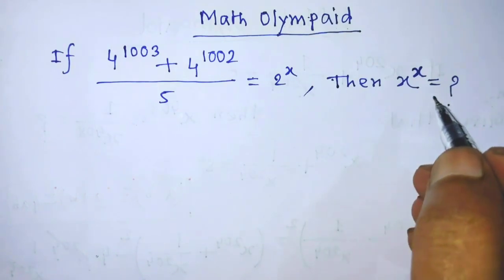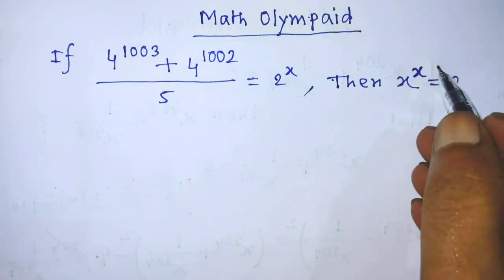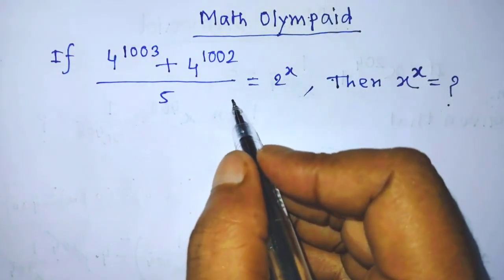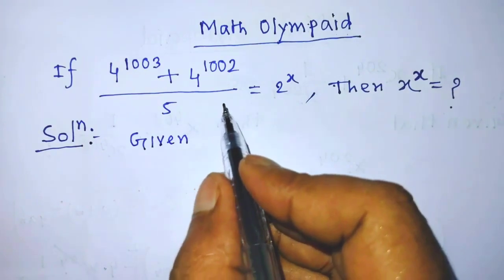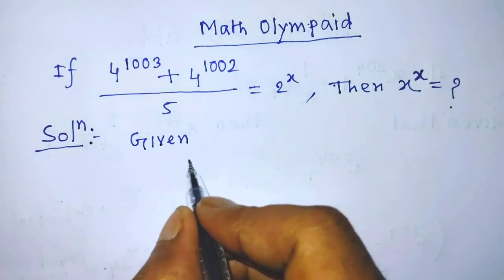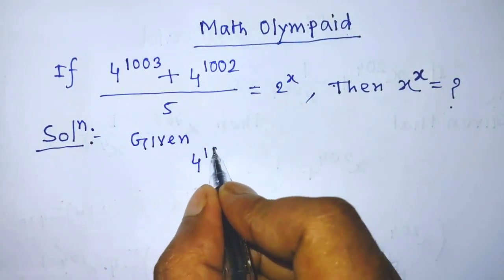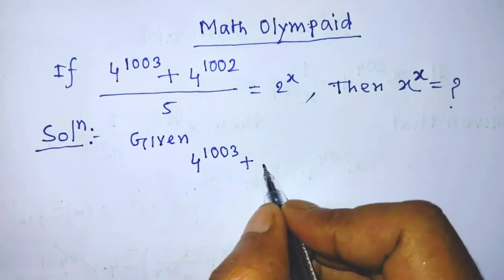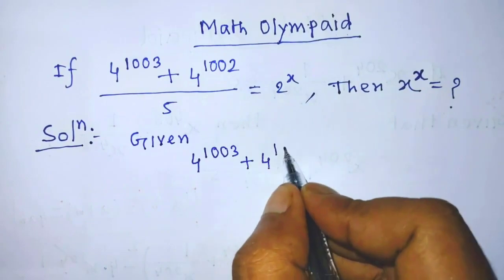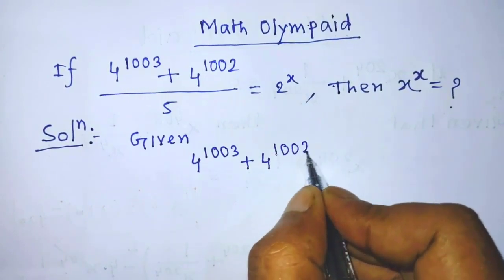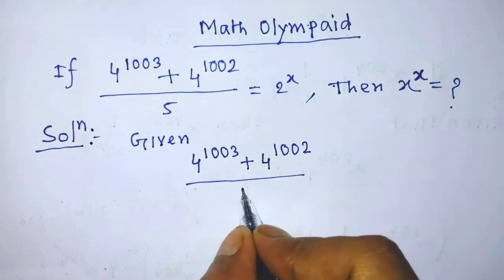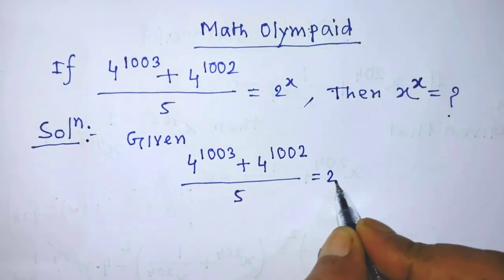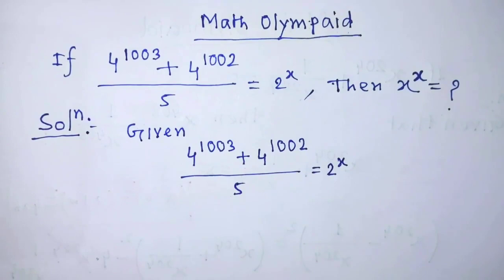Today I am telling you how to find the value of this exponential form from this equation. Our given algebraic equation is 4 to the power 1003 plus 4 to the power 1002, over 5, is equal to 2 to the power x.